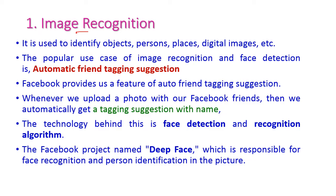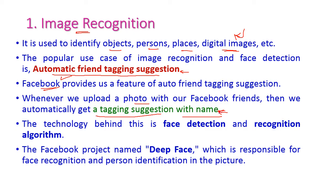The first application is image recognition — using images, the system can identify objects, persons, places, or digital images. A popular example of this application is automatic friend tagging and suggestion, which is implemented in Facebook. When we upload a photo on Facebook, we automatically get a tagging suggestion with the person's name. The technology behind this is face detection and recognition algorithm. Facebook's project called DeepFace is responsible for face recognition and person identification in pictures.